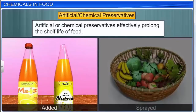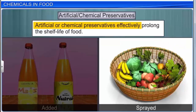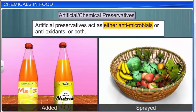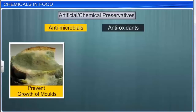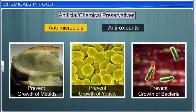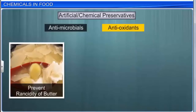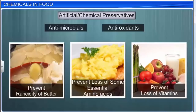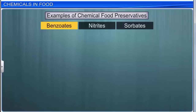Artificial or chemical preservatives are either added to or sprayed on food and have been known to effectively prolong the shelf life of food. Artificial preservatives act as antimicrobials, antioxidants, or both. Antimicrobials in preservatives prevent the growth of molds, yeasts, and bacteria, while antioxidants keep food from becoming rancid and also prevent the loss of some essential amino acids and vitamins. Some examples of chemical food preservatives are benzoates, nitrites, and sorbates.